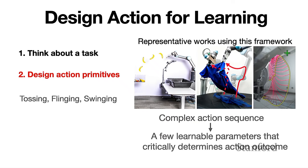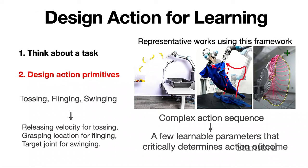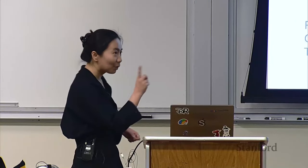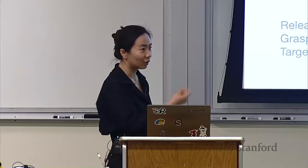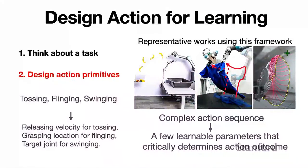These steps of action primitive design are actually very critical in many projects, because fundamentally what it allows us to do is map those very complex action sequences — for example, tossing actions — into just a few learnable parameters that can critically determine the action outcomes. For example, to make the robot able to toss very precisely, we basically code up the whole tossing trajectory. The whole trajectory is fixed, and the only parameter the system needs to learn is the releasing velocity for tossing — just one parameter — and that's enough to give the robot control over where the object will land.